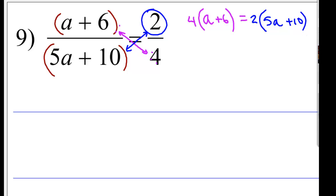And then we have 2 times the other expression, which is 5a plus 10. So let's find the equation right there. Now, we are going to solve this like we did before. So, 4 times a is 4a. 4 times 6 is 24 positive. 2 times 5 is 10a. 2 times 10 is 20.